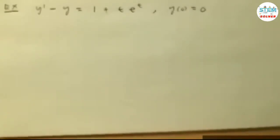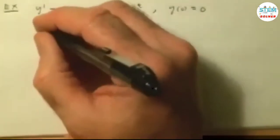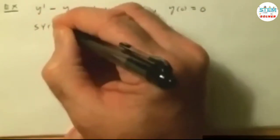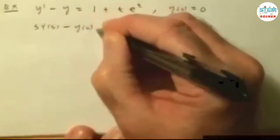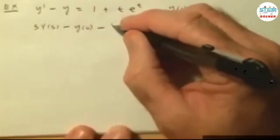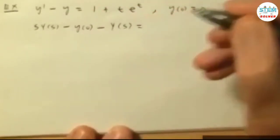We're going to start off by taking a Laplace transform on both sides like we've done before. Laplace transform of y prime is y of s minus y of 0. Laplace transform of y, of course, is just capital Y of s.